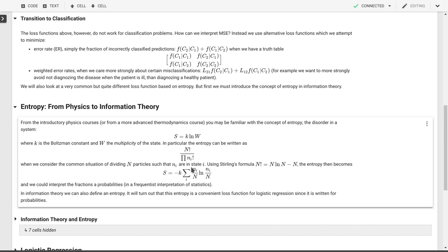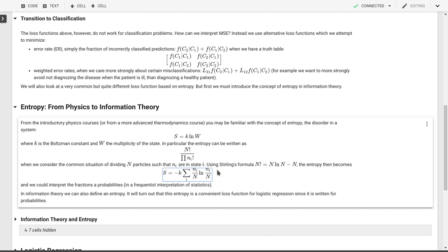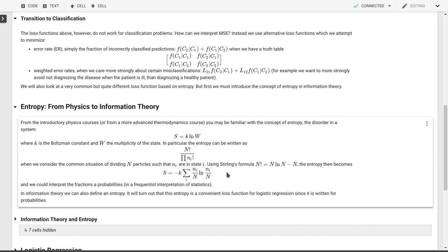Now the last thing we can do is think about little n over big N as the probability that we get a marble in bin i. If we start off with a thousand marbles and there's ten marbles in bin one then that means that there was a one percent probability for each marble to end up in that bin. So we get minus k times the sum of a probability times the logarithm of a probability.